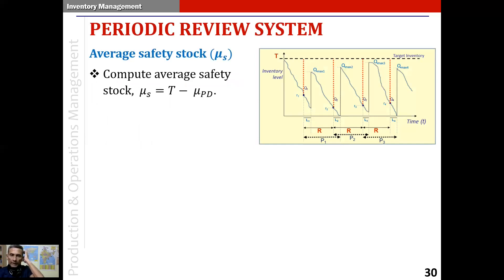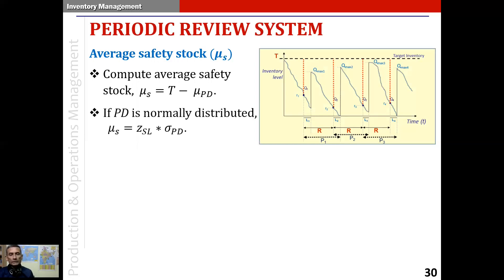Once we compute the target inventory level, we can assess the safety stock in the system. The safety stock is the difference between the target inventory level and the mean protection period demand. If protection period demand is normally distributed, the average safety stock is z of the service level multiplied by the standard deviation of protection period demand. We keep in mind that what we are computing is not a constant value — unlike in the continuous review system — because the reorder point and protection period demand are both variable. So the safety stock we compute is its average value.